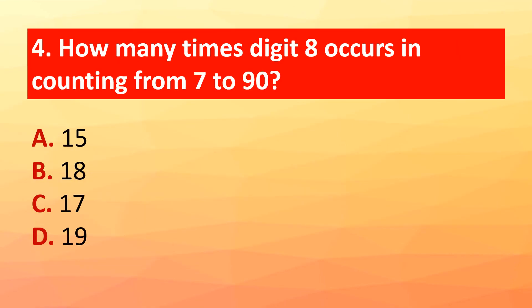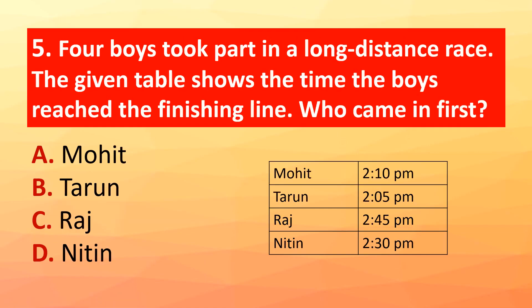Question 4: How many times does digit 8 occur in counting from 7 to 90? The correct answer is option C: 17. Question 5: Four boys took part in a long-distance race. The given table shows the time the boys reached the finishing line.